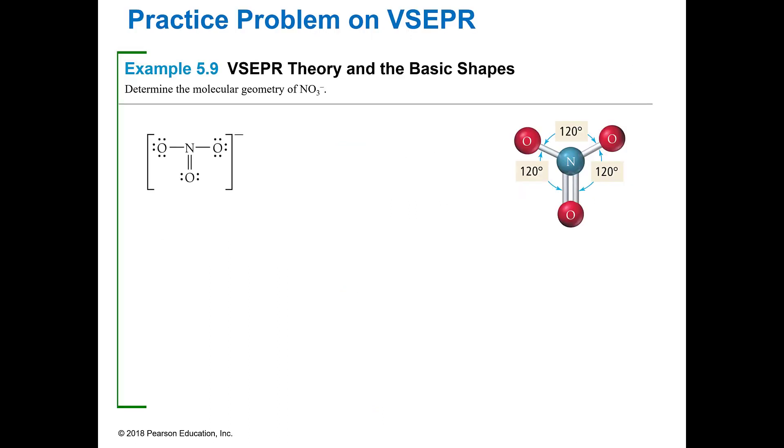So when you look at the geometry of NO3 minus, and we've drawn the Lewis structure for you here. What is the electronic geometry? Because you've got to know that first. How many electron groups do you have? You have one, two, three, right? So you have three electron groups, which means it must be trigonal planar.